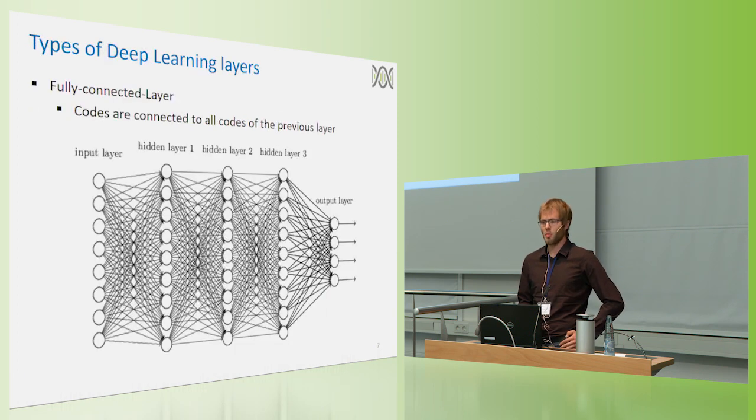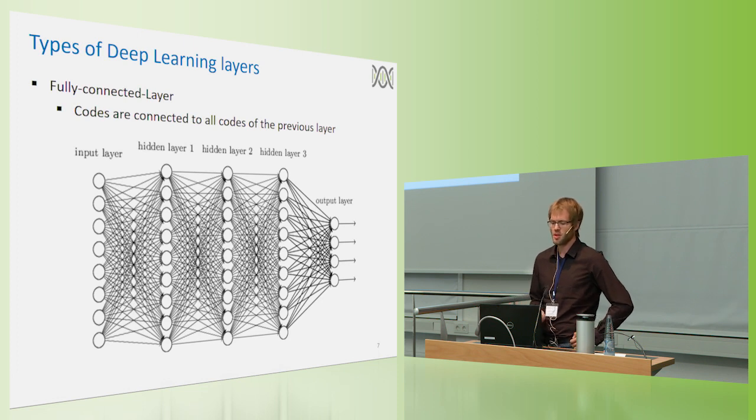And when it comes to models, there are a lot of different types of layers that are possible. The most basic one is called the fully connected layer, which basically means that all nodes of one layer are connected to all nodes of the previous layer.